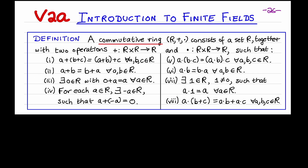A commutative ring consists of a set R, together with two operations, usually denoted addition and multiplication, such that the operations satisfy the following eight properties.